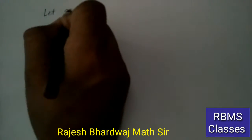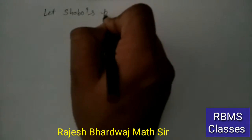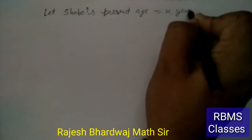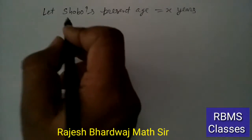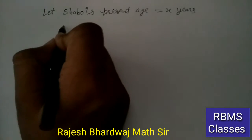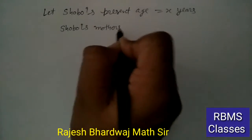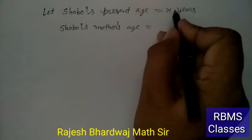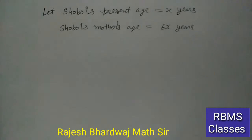Let Sobo's present age = x years। ठीक है बच्चों? अब Sobo's mother's present age क्या होगी? यह six times कह रहा है Sobo की age का, तो mother's age = 6x years।